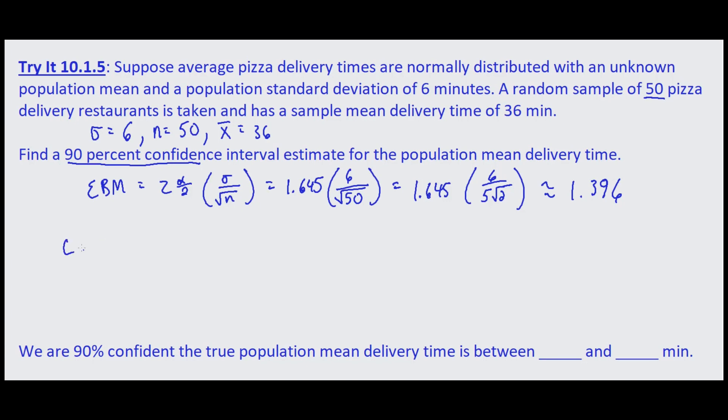So then our confidence interval equals our sample mean of 36 minutes minus our error bound which is 1.396 to 36 plus 1.396.